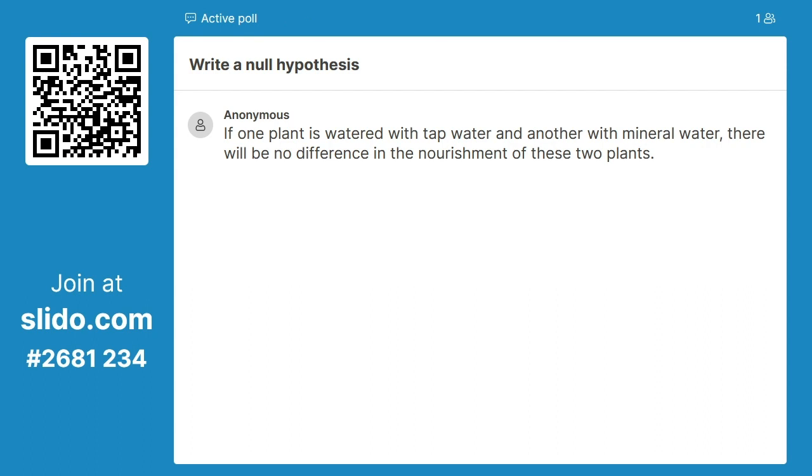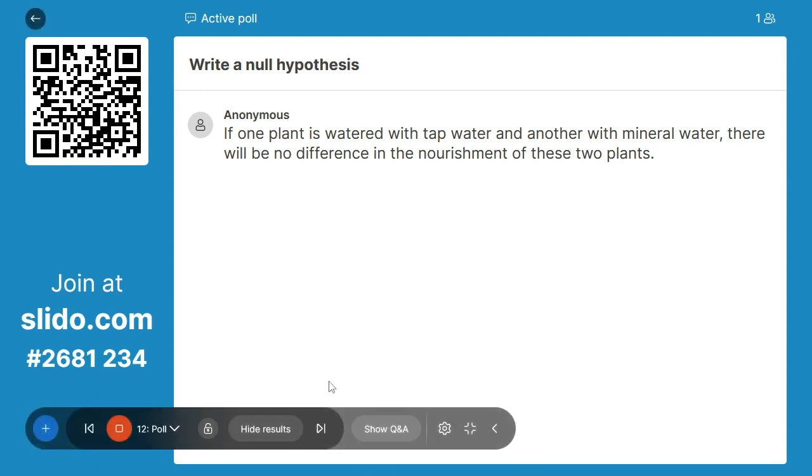Exactly. If one plant's watered with tap water and another one with mineral water, there will be no difference in the nourishment of these two plants. You might be measuring that in something like growth or the color, but ultimately you're just saying we're not going to see anything going on here, we're going to get the same result. That's exactly what we want a null hypothesis to focus on.